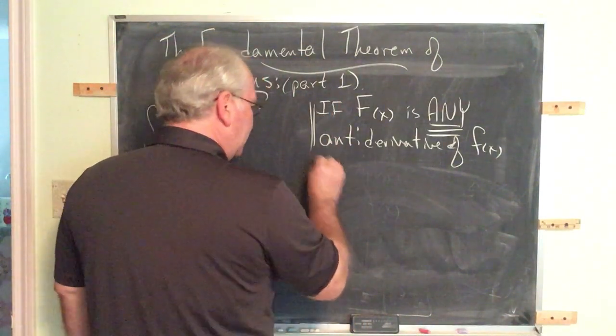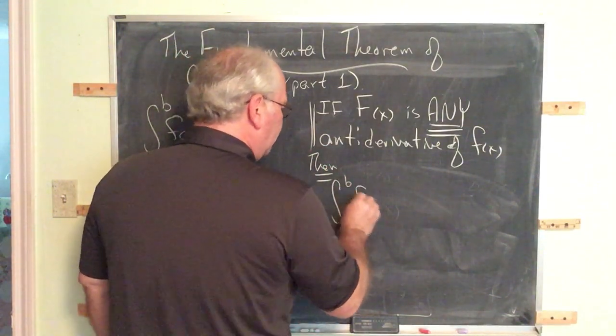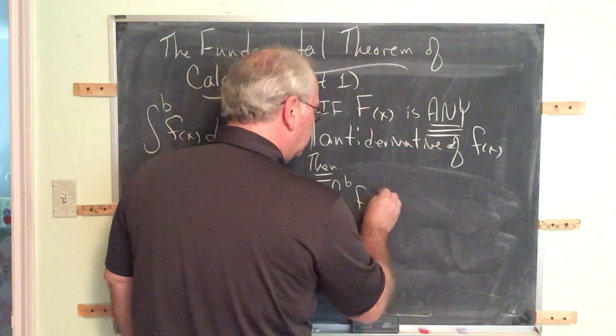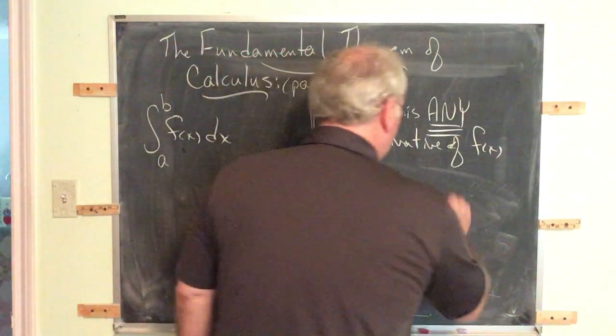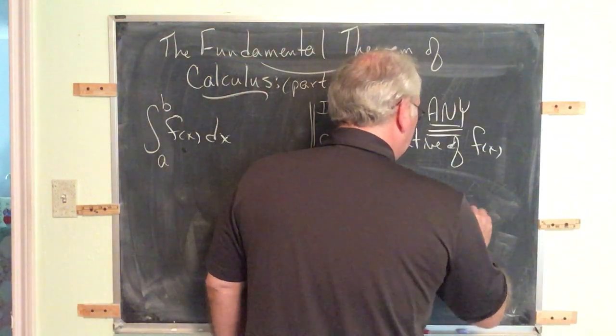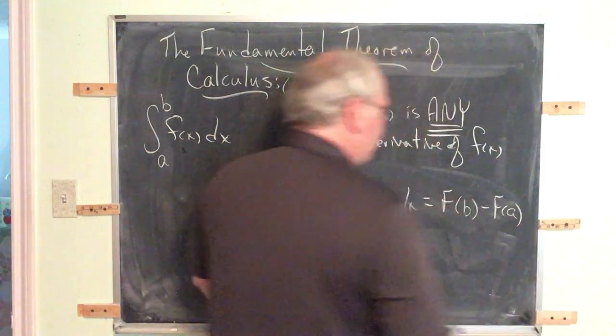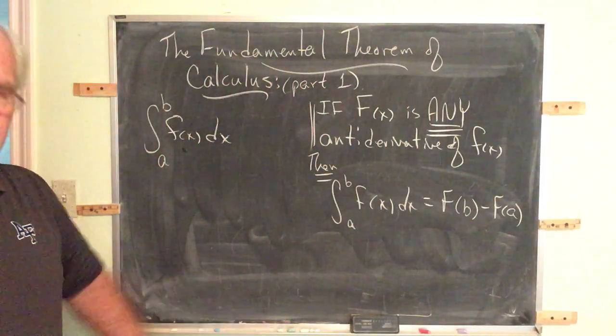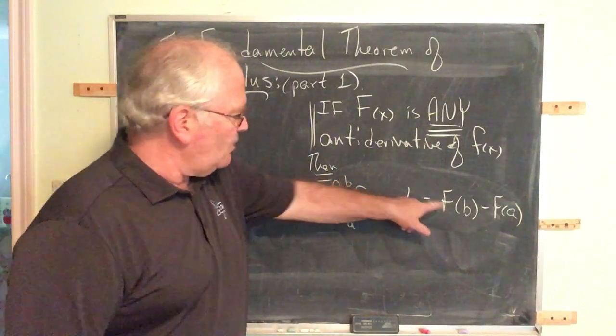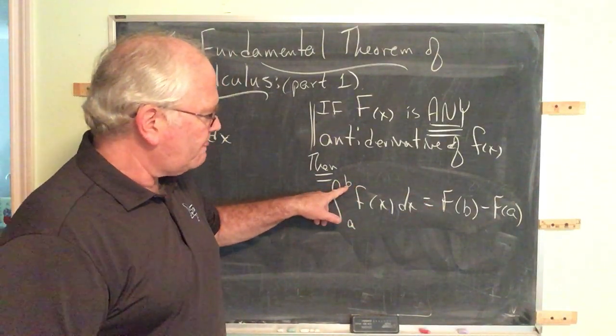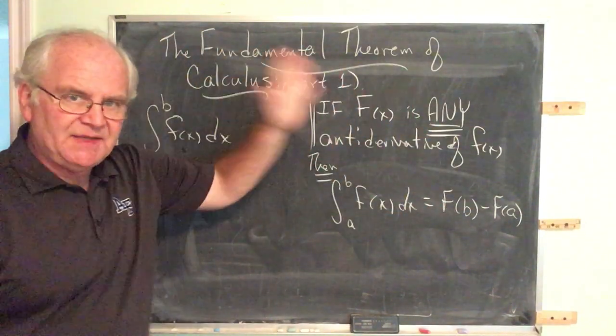If that's the case, then the definite integral from A to B of f of x dx is given by cap F evaluated at b, cap F evaluated at a, and that's it. You take the antiderivative, evaluate it at the upper limit, and evaluate it at the lower limit, and subtract them, and that's it.